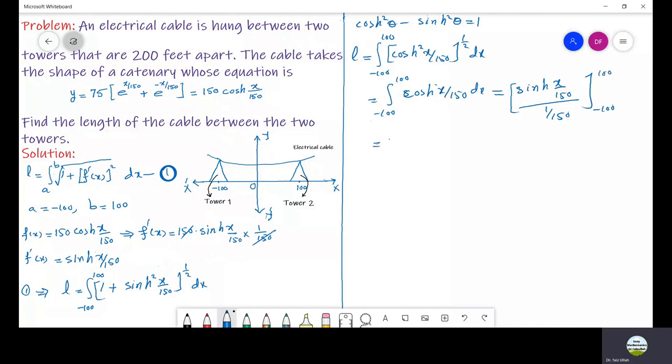From this we can write 150 times sinh(100/150) minus sinh(minus 100/150) and if we simplify this we have sinh(2/3) minus the minus will come outside so this becomes plus sinh(2/3).